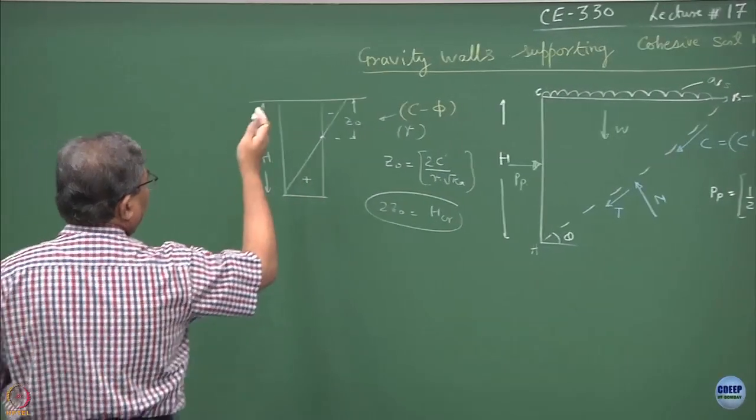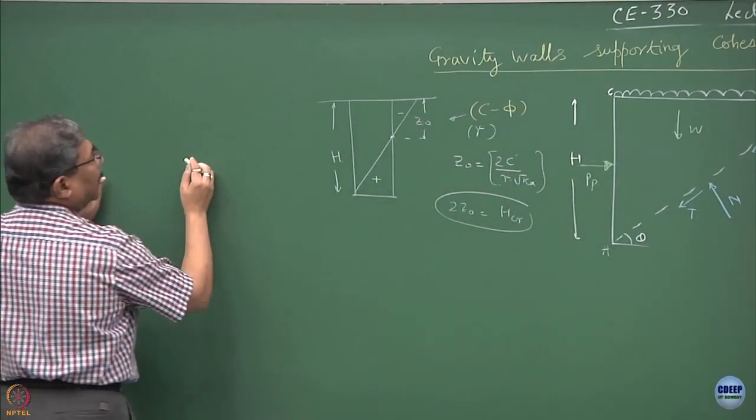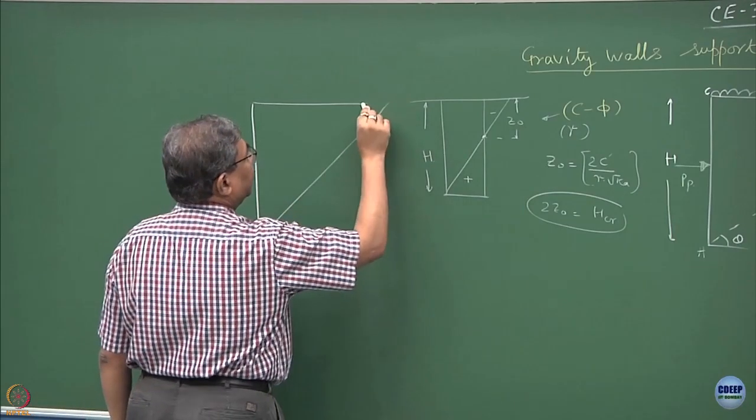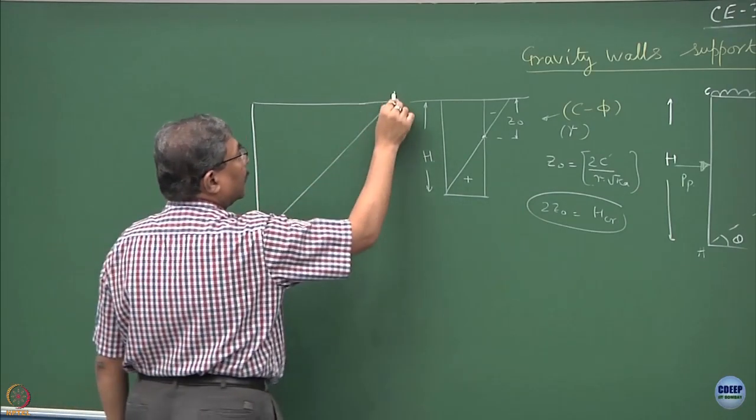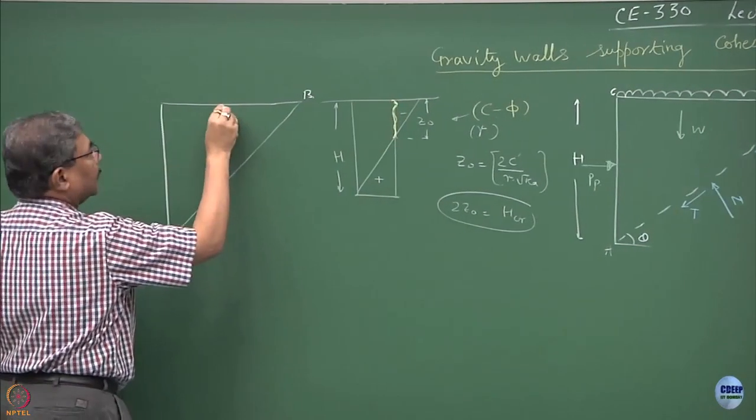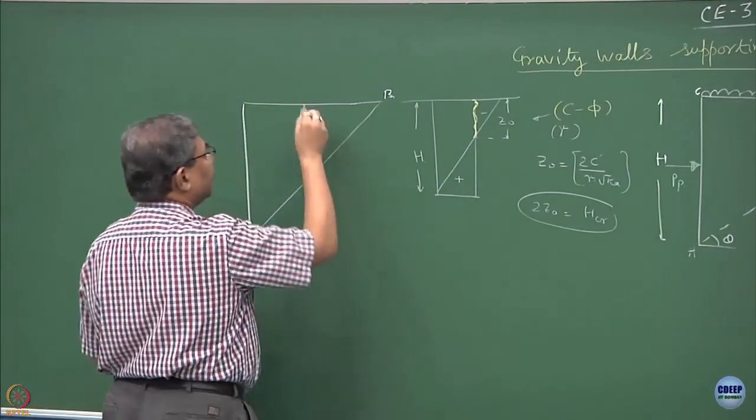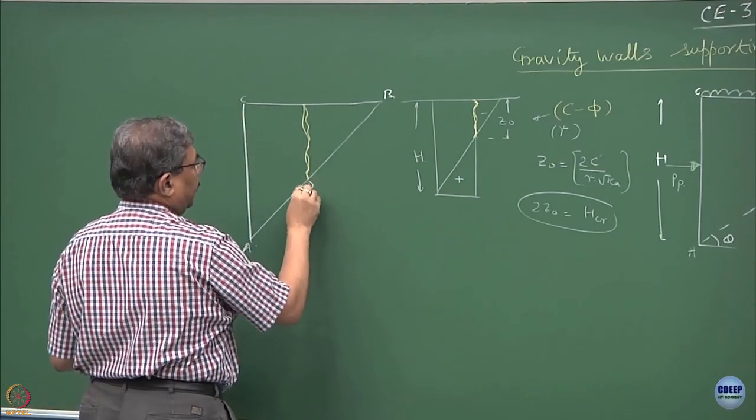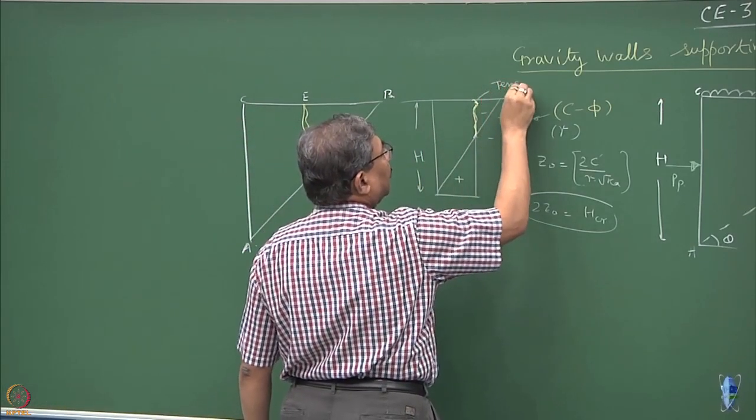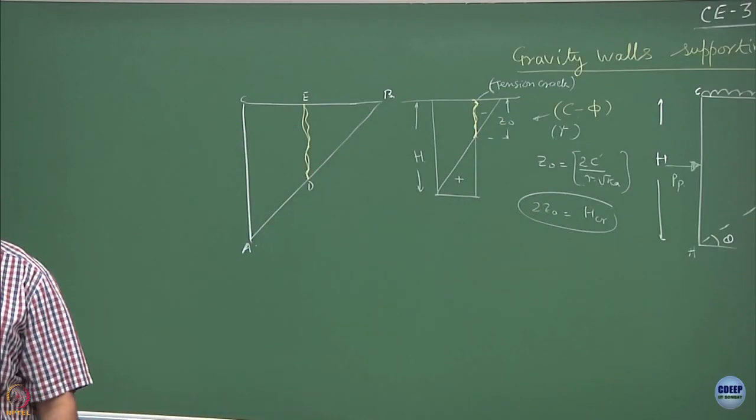So, if I extend this logic to the stability block over here, what you will realize is this. Now, this is the slip surface. This tension crack I am depicting as a crack over here. So, this becomes C, now C is this, D and E. This is the tension crack which is developing because of the inherent property of the soil mass being cohesive.